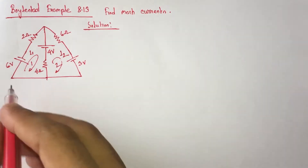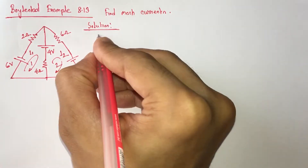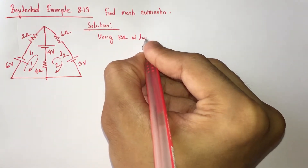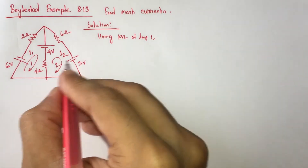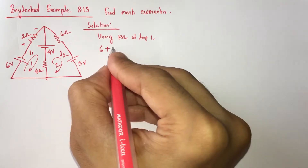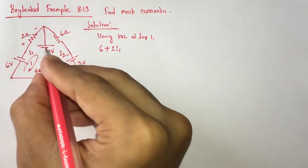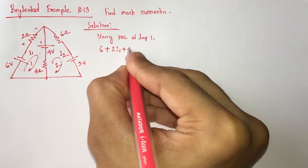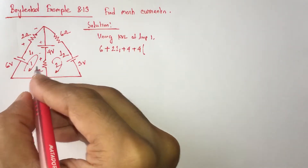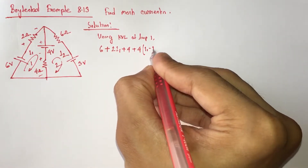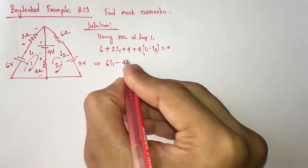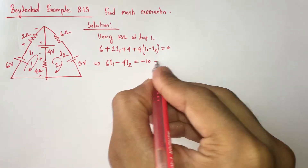Now, running KVL through loop 1, we will get: 6 plus 2I1 plus 4, where I1 is going downward and I2 is going upward, so I1 minus I2 equals 0. Simplifying the equation: I1 minus 4I2 equals minus 10. This is equation 1.